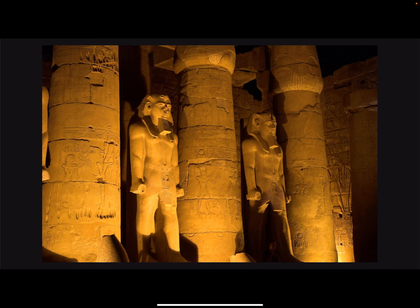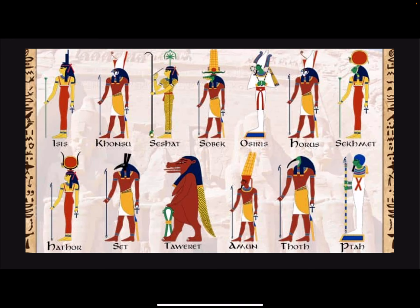Ancient Egypt was a theocratic society, meaning that most aspects of life centered around religion. Ancient Egyptian religion was polytheistic, so the Egyptians worshiped many different gods that controlled different aspects of daily life.